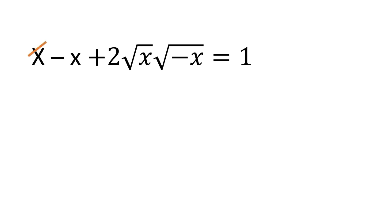Now this x and negative x can be cancelled out. We have only 2 square root of x times square root of negative x equal to 1.